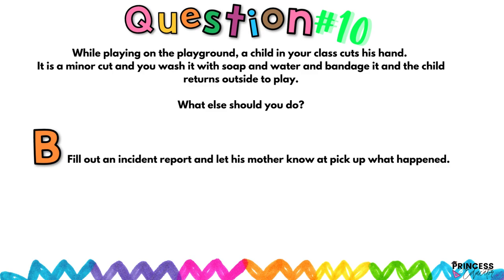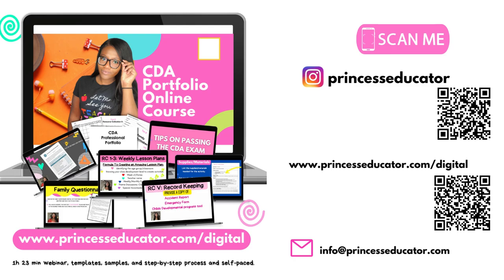Even if the injury is small, some parents can make a minor paper cut into a major issue or claim you didn't notify them. Fill out the incident report, explain what happened and what you did, let your director and co-teacher know, and also message the parent through your parent communication app — whether ClassDojo, Brightwheel, or ProCare — so they know ahead of time. Have that incident report ready at pickup.